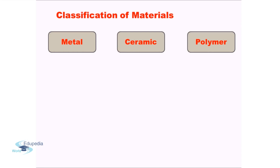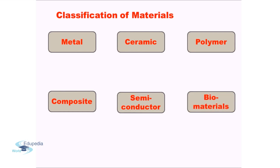Then what we know as polymers — the most prominent ones are polythenes and plastics which are used to carry day-to-day items, though that is environmentally not friendly. Then we have composite materials, semiconductors, and biomaterials. The initial four — metal, ceramic, polymer, and composite — are the most broad categorization of materials. Semiconductors and biomaterials kind of fit into this scope as a subgroup, but mainly we have metal, ceramic, polymer, or composite.